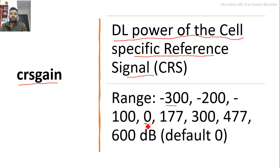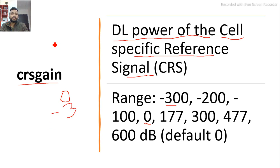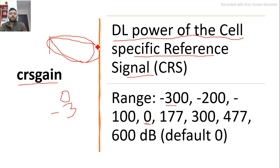If we want to increase or decrease our coverage, we can change the CRS Gain. For example, if the default value is 0 and users are very high in a cell and you want to exclude some, you can change CRS Gain from 0 to minus 3 dB or minus 2 dB. What will happen is: if the cell was originally serving a large area, changing CRS Gain to minus 3 dB will reduce the coverage, excluding users in the boundary area and reducing the number of served users.